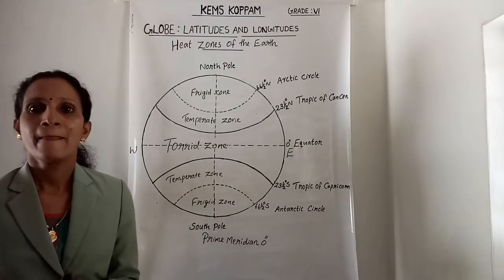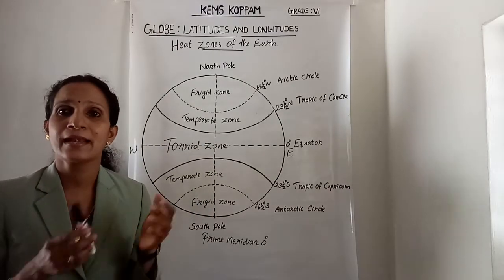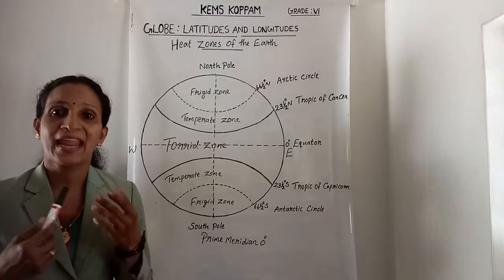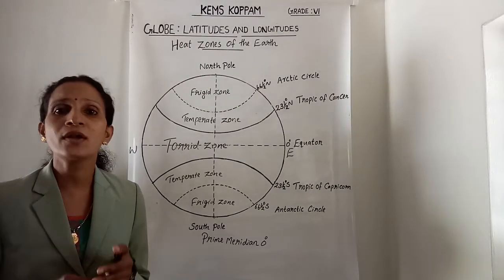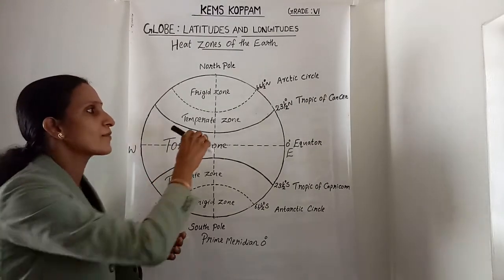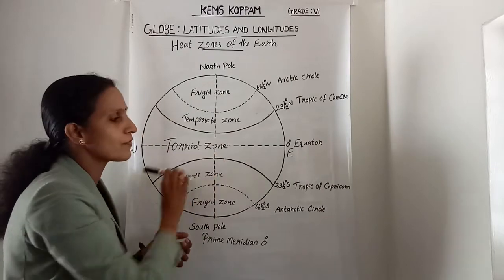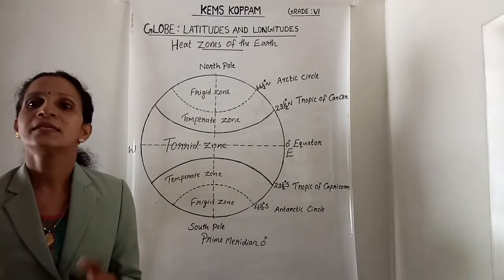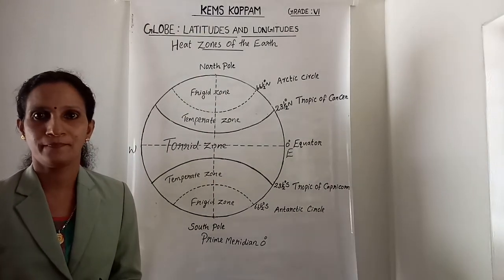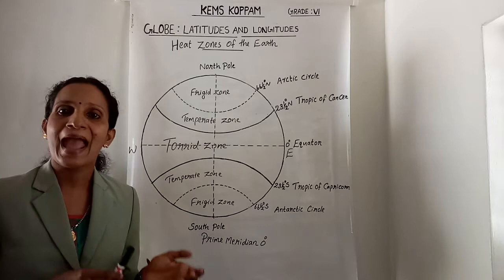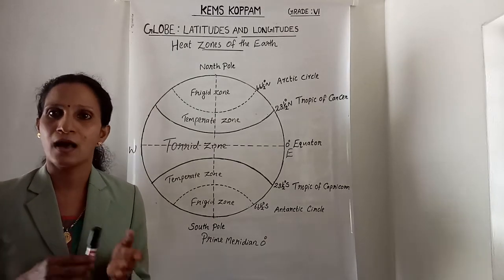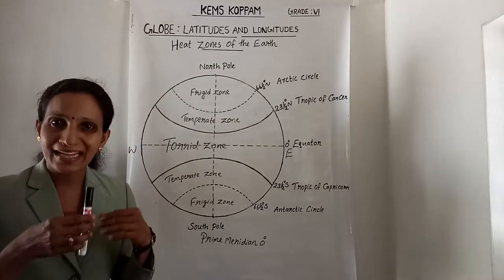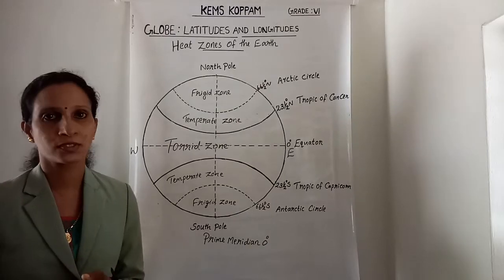The midday sun never shines overhead on any latitude beyond the Tropic of Cancer and the Tropic of Capricorn. The angle of the sun's rays goes on decreasing towards the poles.